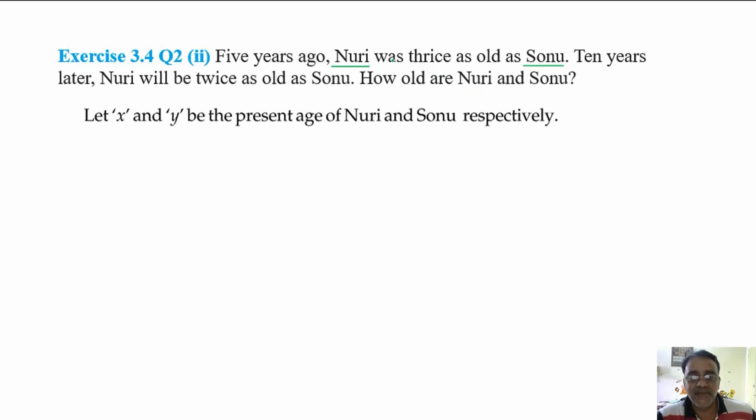Okay, so according to the question, Nuri is 3 times Sonu, 5 years ago. So what we will get? x minus 5 equals 3 times y minus 5. Very good. x minus 5 is equal to 3 times y minus 5. So 3y minus 15.